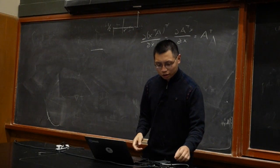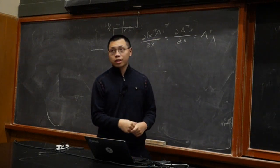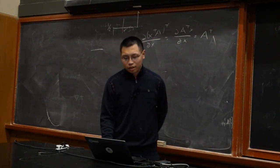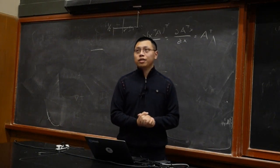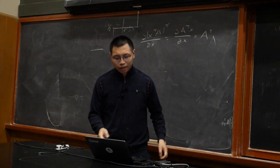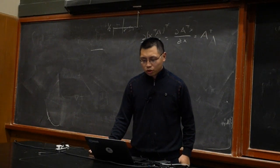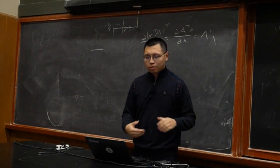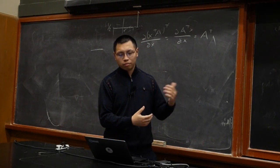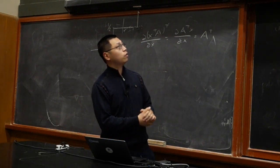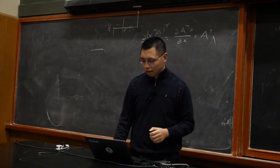We have similar rules for matrices and vectors: A times U, where A is a constant, gives A times partial U over partial x. If A is a matrix, we pull it out front. And U plus V follows the same rule as before.